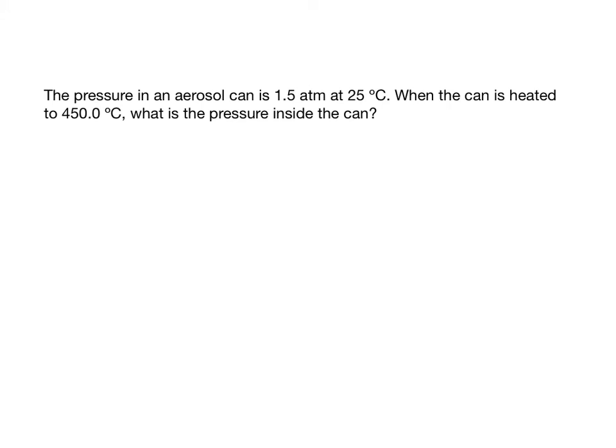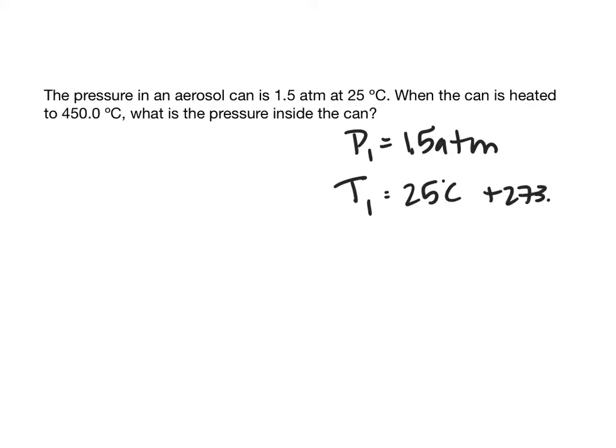For example: if the pressure inside an aerosol can is 1.5 atmospheres at 25 degrees Celsius, and the can is heated to 450 degrees Celsius, what is the pressure inside the can? There's no way to use PV equals NRT here. The volume stays the same since the aerosol can doesn't change. So P1 is 1.5 atmospheres and T1 is 25 degrees Celsius plus 273.15, giving us 298.15 Kelvin.